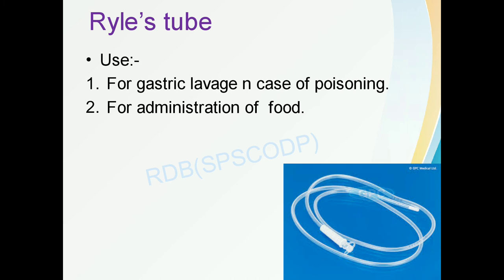The next equipment is Ryle's tube. It is used for gastric lavage, in cases of poisoning, and for administration of food to patients who cannot consume food orally. In cases of poisoning, gastric lavage is performed to remove stomach contents using the Ryle's tube.